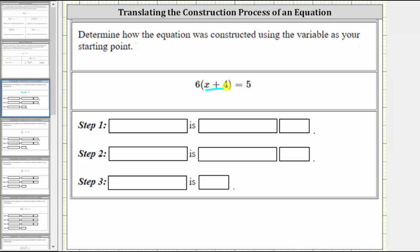Because we have x + 4, the variable x is increased by 4 for the first step in the construction process. So we say x is increased by 4, which gives us the expression x + 4.